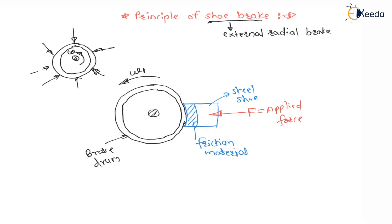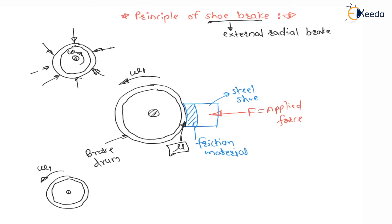Now we have to see the direction of friction and the braking torque, and we have to calculate the braking torque. The coefficient of friction between the brake drum and the friction material is mu. Looking at the free body diagram for this brake drum — which is rotating in the anticlockwise direction with angular velocity omega 1 — due to the application of braking force, it rotates at a lower angular velocity omega 2, meaning its speed is decreasing because of the braking action.